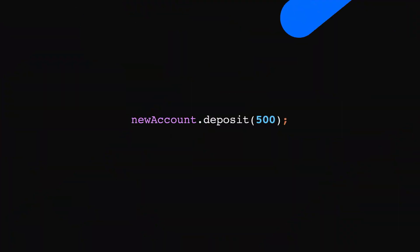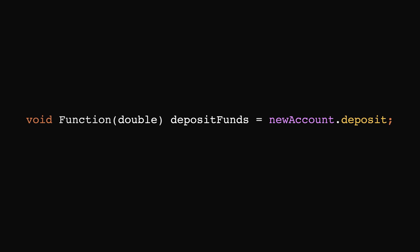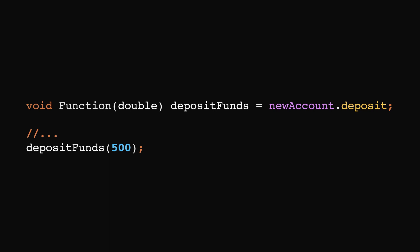Next, let's review function tear-offs as a refresher. Suppose you have an object `newAccount` and you call the `deposit` method on it with $500. You can tear off the method call and save it in a variable called `depositFunds`, which is a `void Function(double)`. This variable holds the reference to `newAccount.deposit` — the receiver and which method to call. You can pass `depositFunds` as a callback to other functions, and `depositFunds(500)` is equivalent to `newAccount.deposit(500)`.